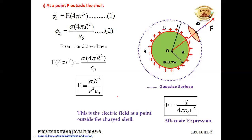To explain the alternate equation: in place of sigma we write Q upon 4 pi capital R squared. That capital R squared cancels with the capital R squared, leaving E equals Q upon (4 pi epsilon naught r squared). Sigma is charge upon surface area of the hollow sphere, and the surface area is 4 pi capital R squared.